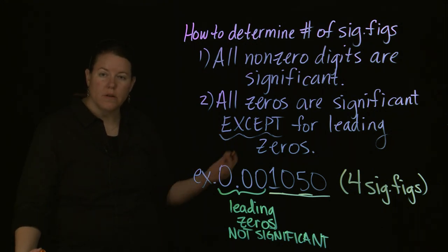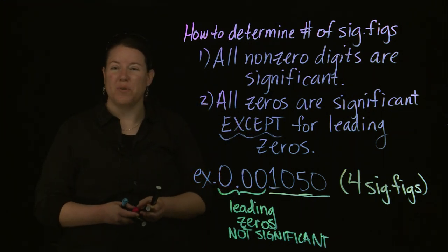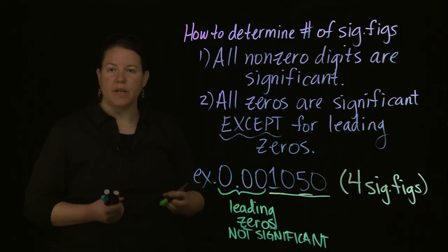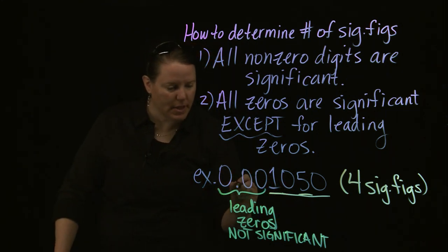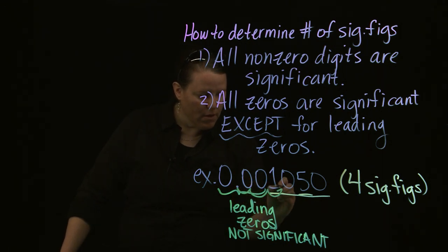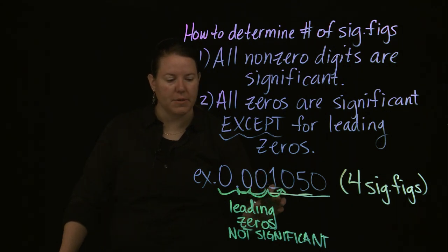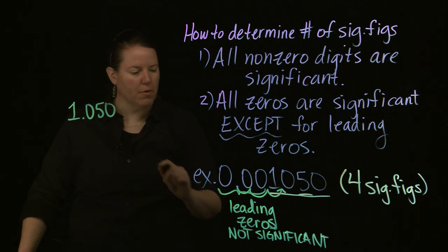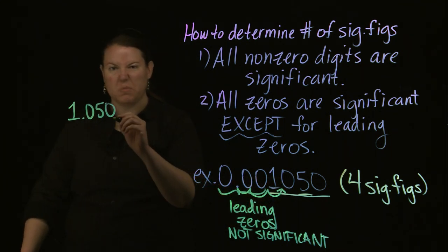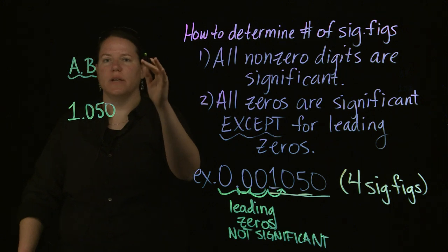For those who don't want to deal with leading zeros, we tend to put everything in scientific notation. What you're doing is moving the decimal point to the immediate right of the leftmost non-zero digit. In this case, I would move it to get 1.050, and the number of spaces moved becomes the exponent. So you always have your significant figures here, and then times 10 to some power — that's how many significant figures you have.